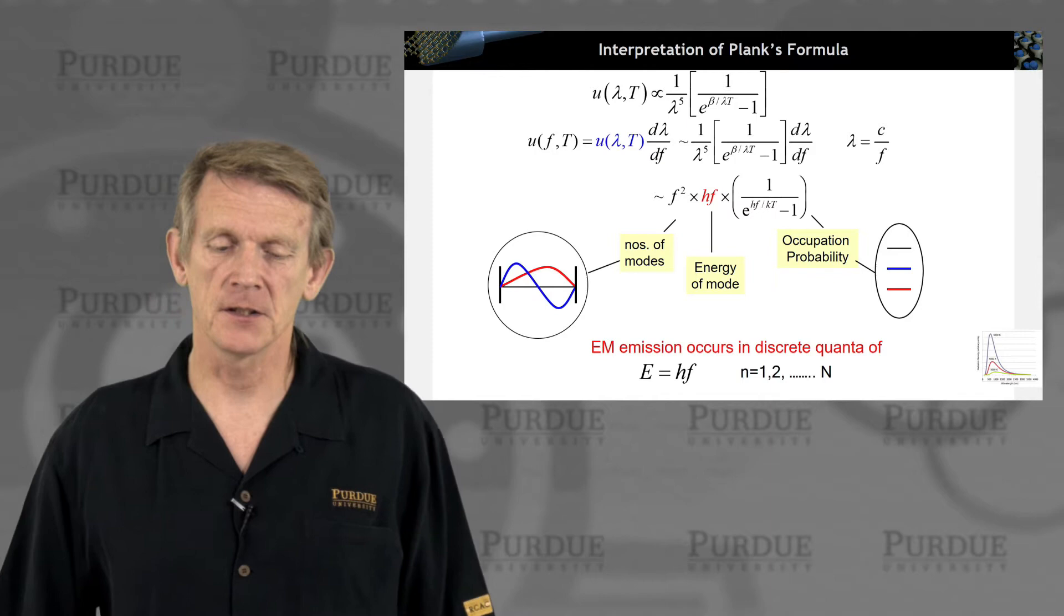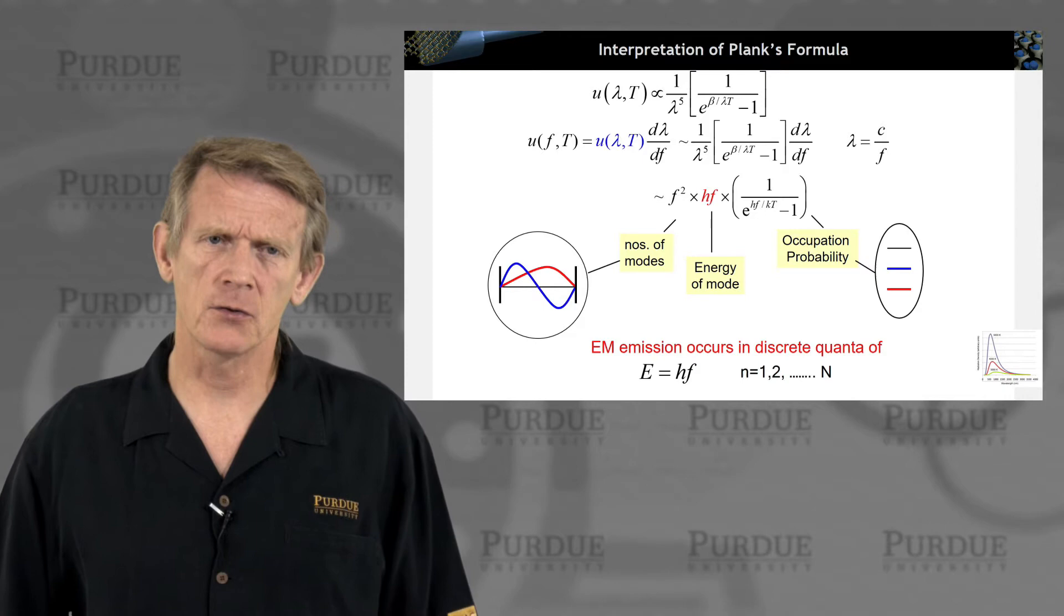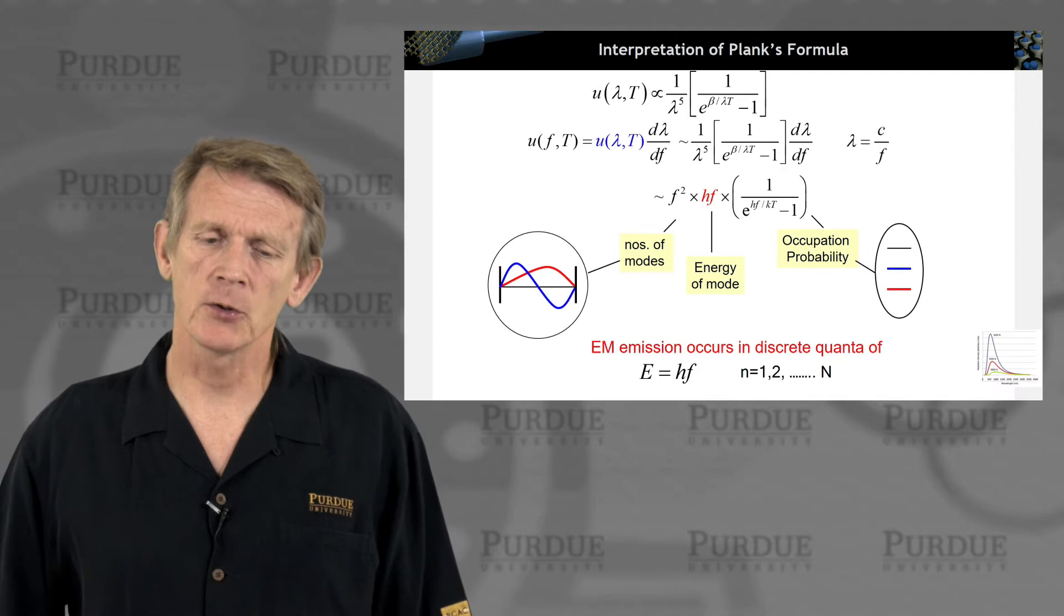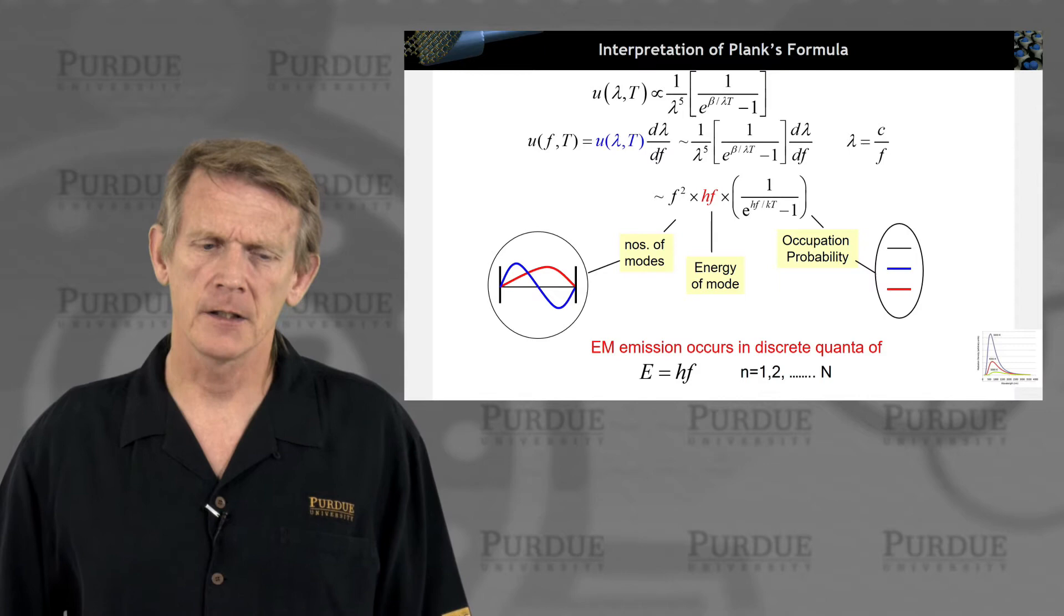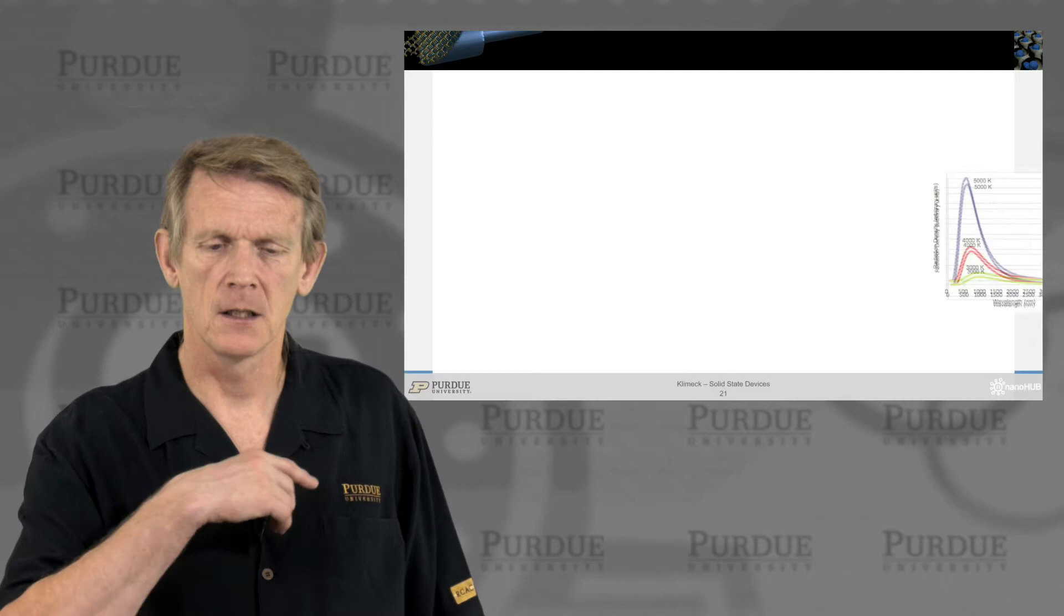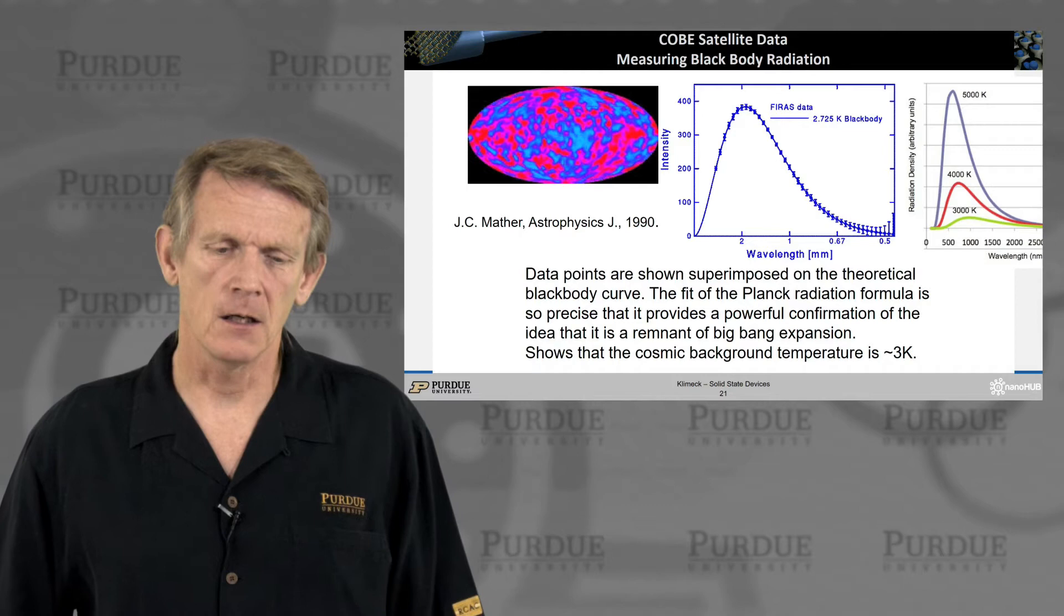Now, this is an interesting aspect that the electromagnetic emission in the system occurs for discrete quanta. So there's something discrete about light emission coming out of a black box. So that was the first advent of seeing that light may be having a discrete nature to it, rather than the typical known understanding of a continuous wave.